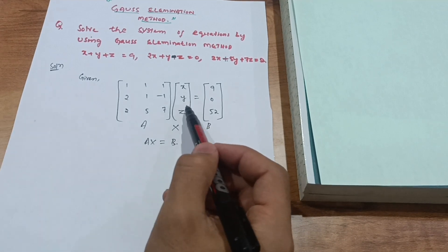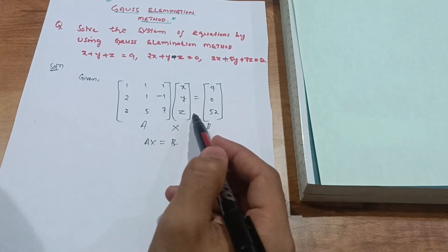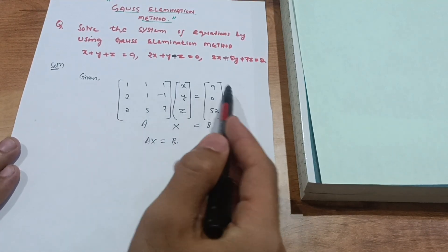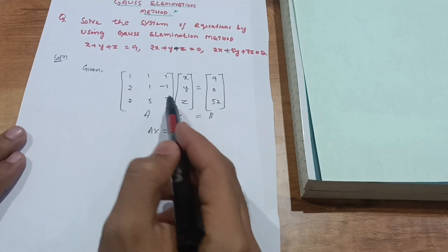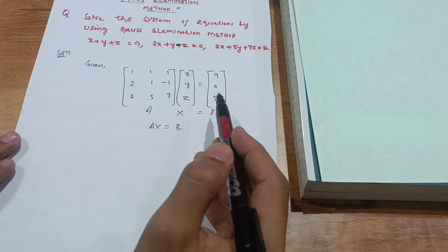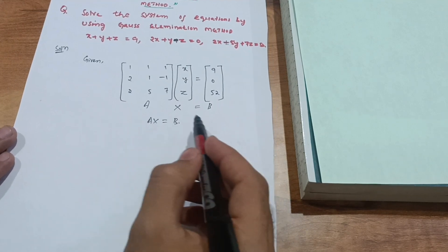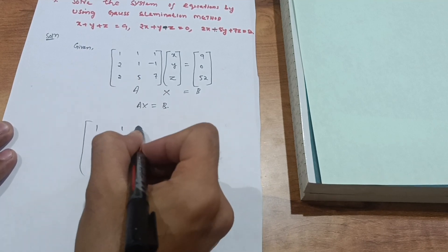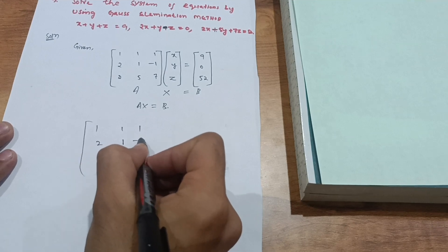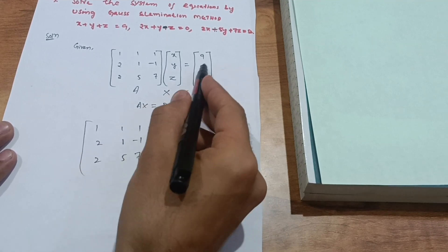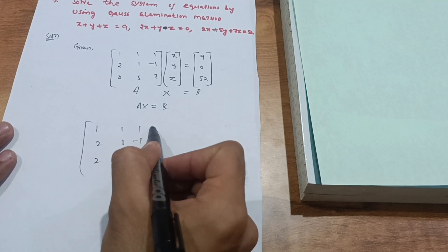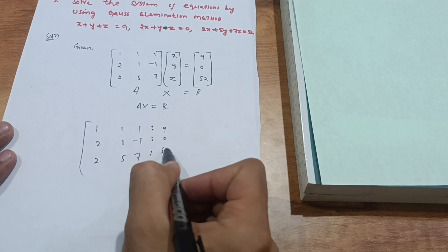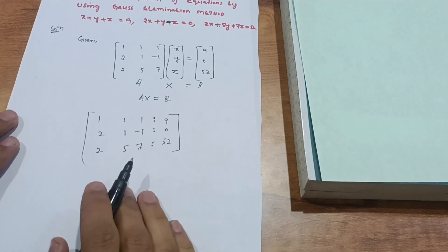Since there are three unknowns x, y, z, you cannot simply cross-multiply. Instead, I will combine matrices A and b together into one augmented matrix to solve jointly. So the augmented matrix is: [1, 1, 1 | 9], [2, 1, minus 1 | 0], [2, minus 5, 7 | 52].